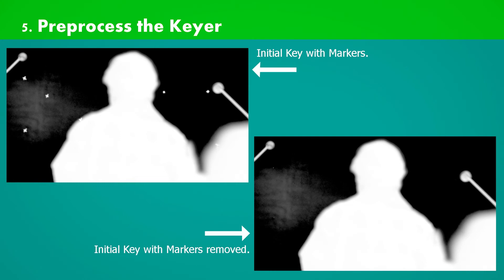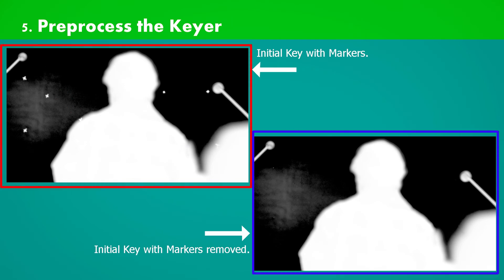Also look at the key. Our markers are fully removed and also notice the soft edges. Before they were integrated with soft edges and now they are all clean. Comparing both matte outputs, the first one is initial key with markers and second one is initial key with marker removed.